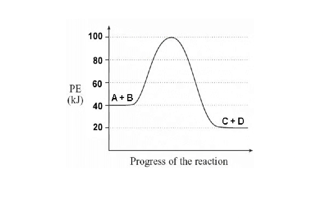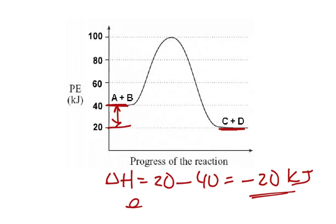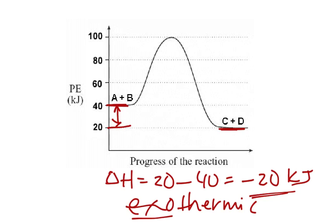Now we can do the same thing here with an exothermic reaction. In exothermic, here's the reactants A and B, here are the products. We can see the delta H. Again, this is going to be 20 — the final value, 20 — minus the initial value, which is 40. So in this case it's going to come out to be negative 20 kilojoules, and that is always true whenever you have an exothermic reaction. It's going to be a negative value for the delta H. If you see a negative delta H, you know it's exothermic, you know energy is given off, and energy would show up on the right side of the equation. So for this case, we'd say A plus B turns into C plus D plus heat energy.